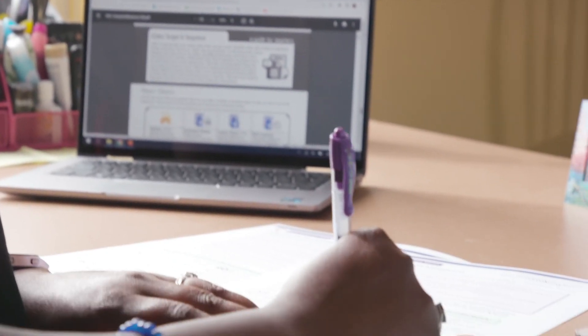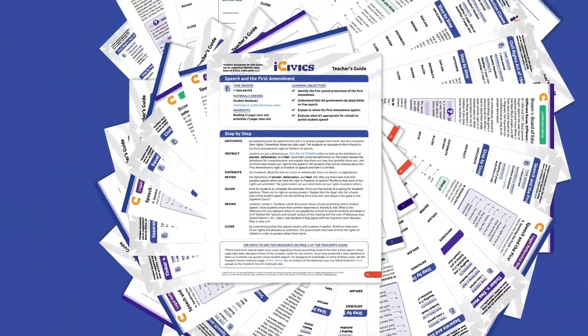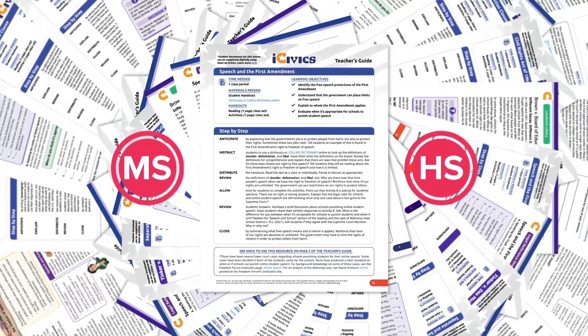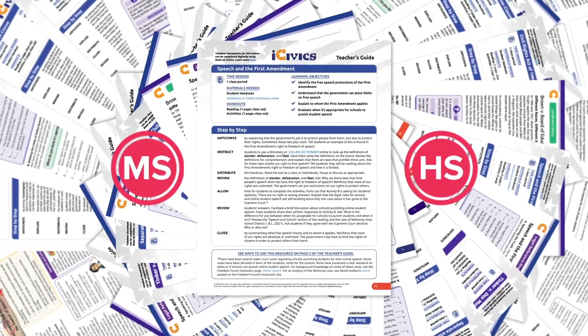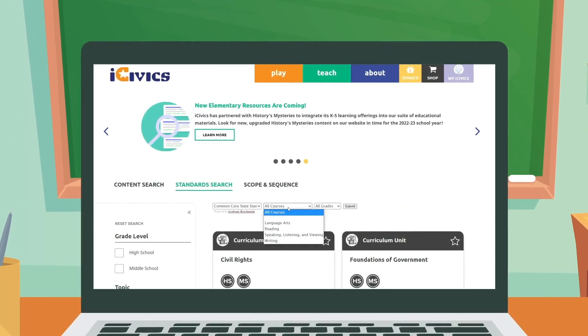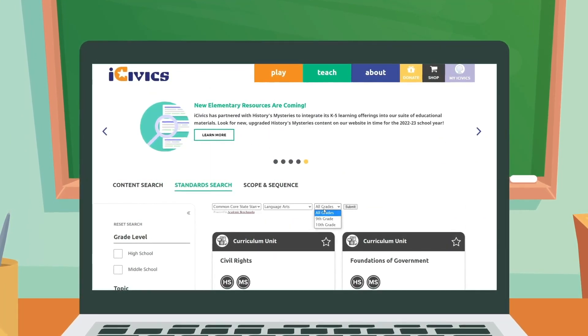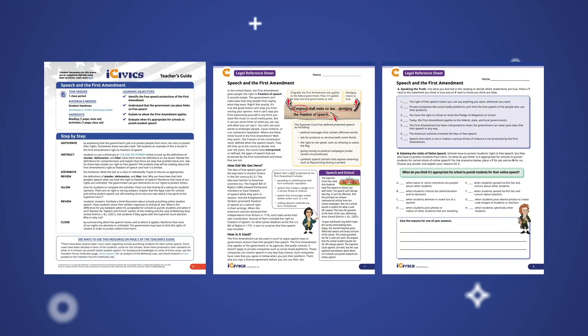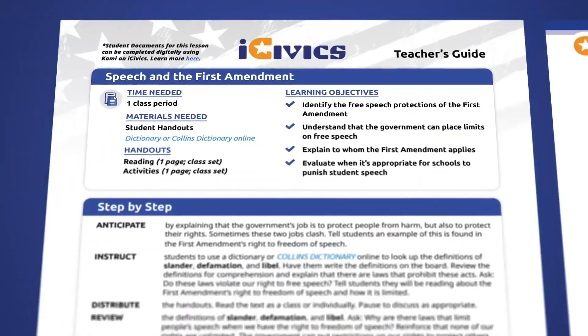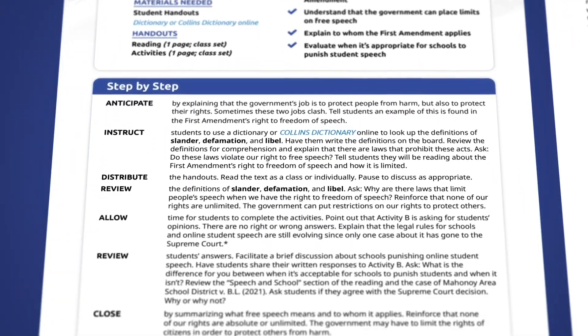At iCivics, we understand how time-consuming lesson planning can be — your time is precious and we want to help you protect it. That's why we've created hundreds of free middle and high school lesson plans. Each lesson is designed to be off the shelf, requiring minimal prep time for educators. Our resources can be searched by state standard, Common Core standard, keyword, or topic. iCivics lesson plans offer comprehensive support including student readings, classroom-ready activities, and a teacher's guide with step-by-step instructions.